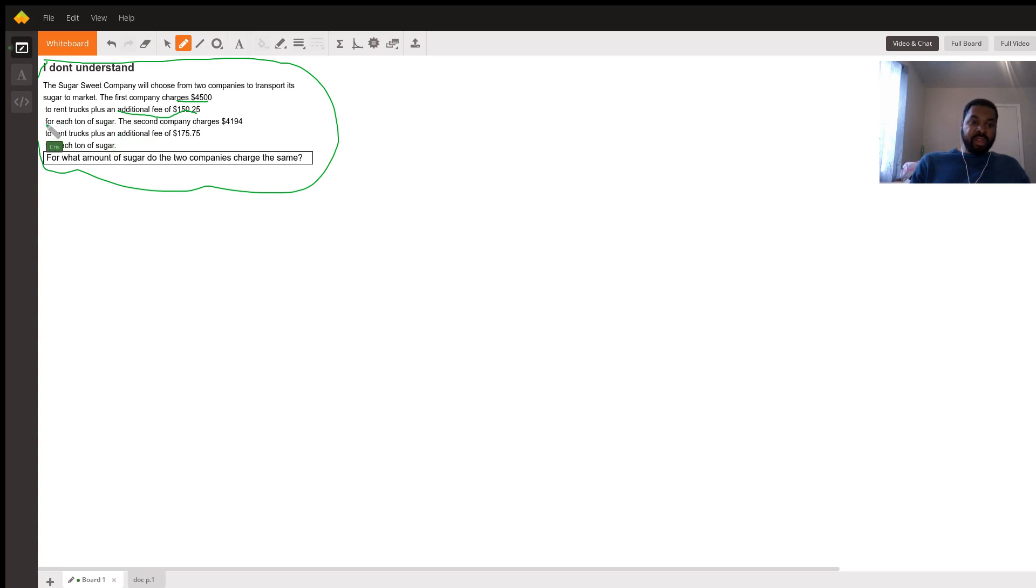for each ton of sugar. Another company charges $4,194 for the truck plus an additional fee of $175.75 for each ton of sugar. It's important that we know what we're working with.